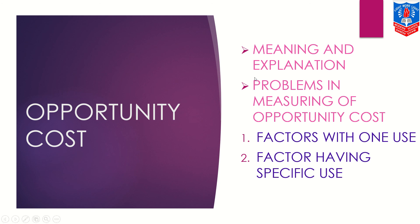Now let us move on to the problems in measuring opportunity cost. The very first problem is factor with one use. If a factor has only one use, that means there are no options available. If any factor of production has only one use, then its opportunity cost cannot be decided. For example, some piece of land is only used to produce grass — for that piece of land, opportunity cost cannot be calculated. This will also be applied for an unemployed person — if they have no work, how can we calculate an alternative cost?